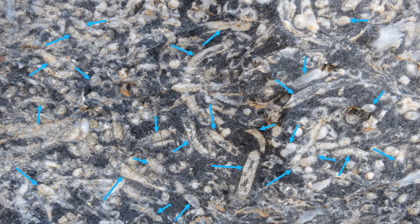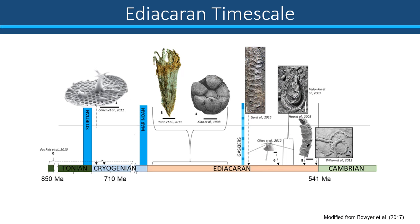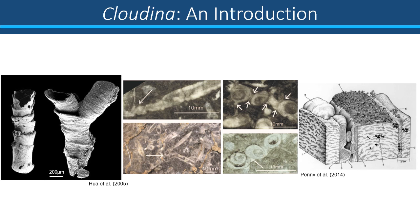Here we have an accumulation of biomineralising Ediacaran tubular fossils called Cloudina. The terminal Ediacaran saw multiple evolutionary advances, including motile behaviours and biomineralisation. Cloudina show the first evidence of macrophenal biomineralisation at around 550 million years ago in the terminal Ediacaran, just before the Cambrian boundary. Cloudina are the most well studied of the Ediacaran skeletal taxa, due to its widespread distribution and potential index fossil status.